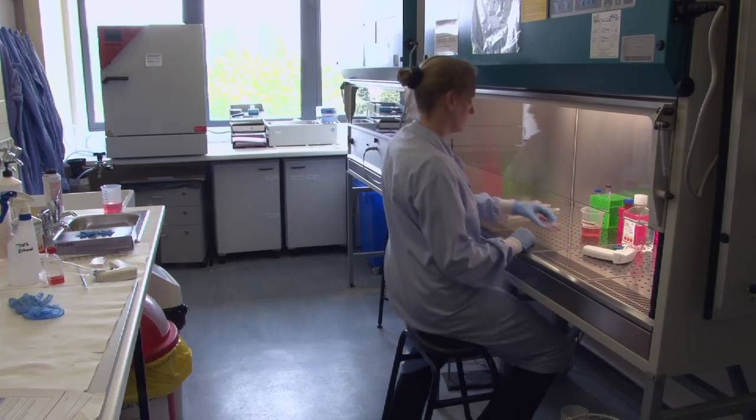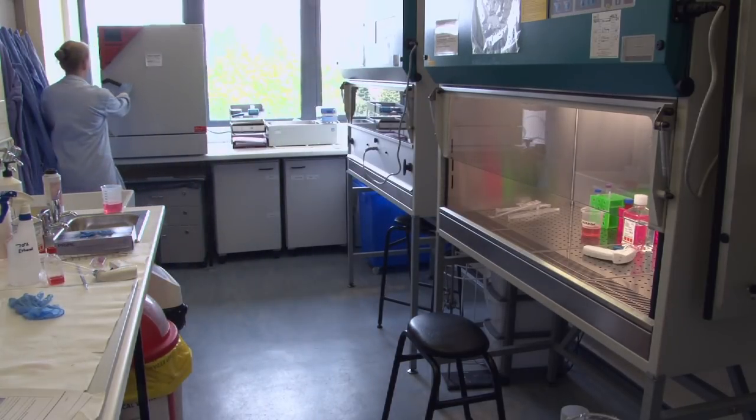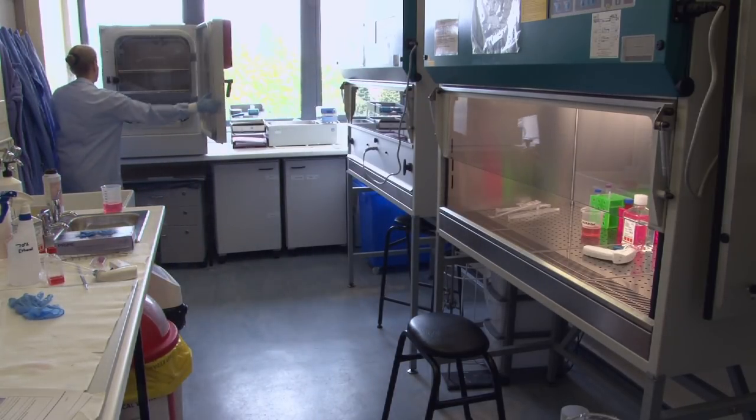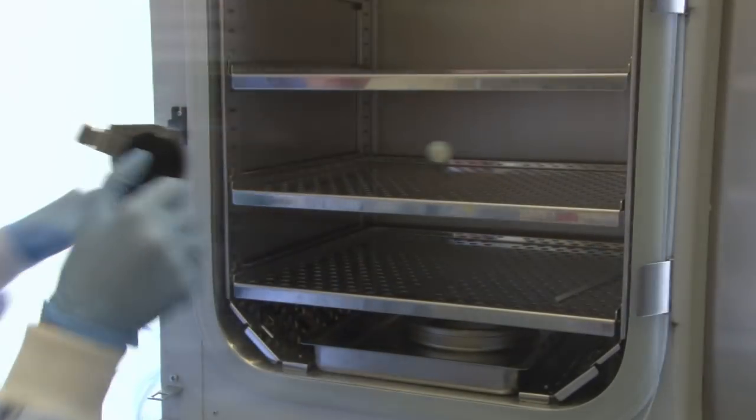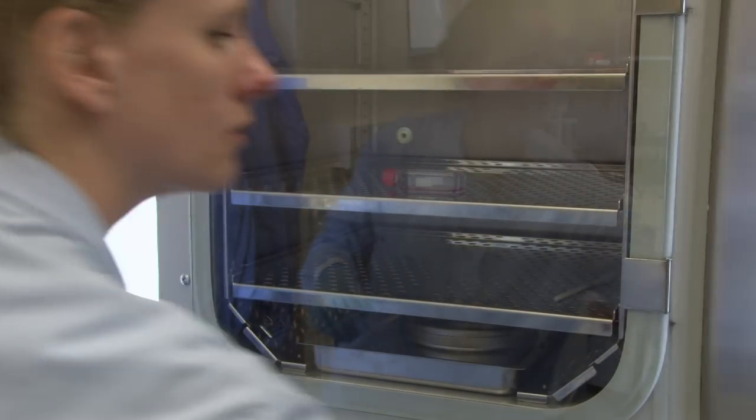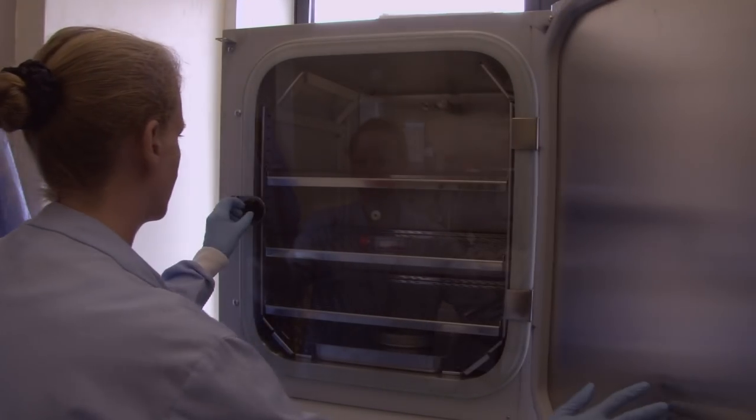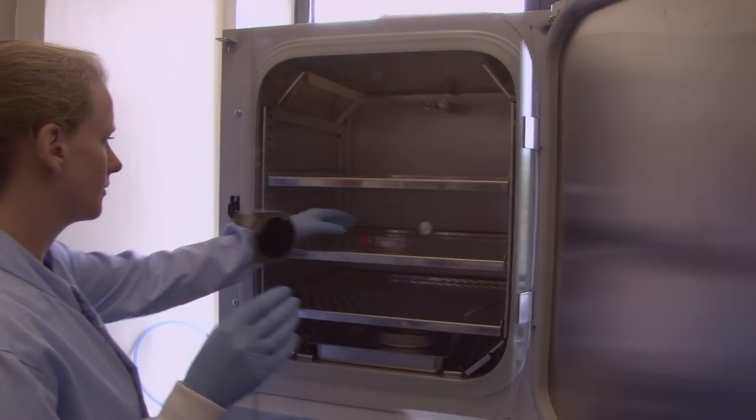The trypsin is a digestive enzyme, and works most effectively at 37 degrees centigrade. Put the flask into an incubator for three to four minutes. Don't leave the cells in the trypsin for too long, or you'll remove the cell's surface signaling proteins.